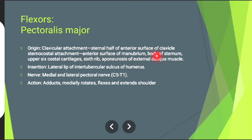Body of sternum, upper six costal cartilages, sixth rib, and aponeurosis of external oblique muscle. Insertion: lateral lip of intertubercular sulcus of humerus.